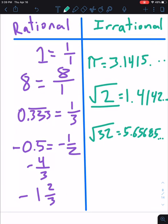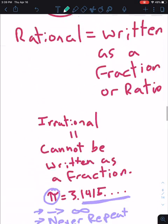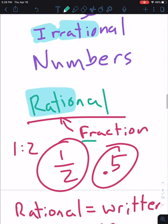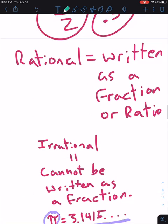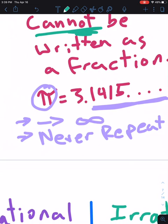So the main takeaway from this lesson, we've got all of these examples up here you can use. But if the number can be written as a ratio or a fraction, it's rational. If the number cannot be written as a fraction, it's irrational.